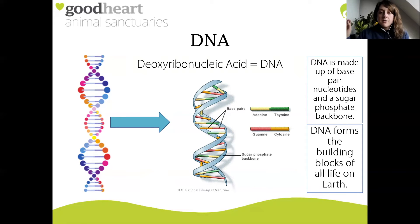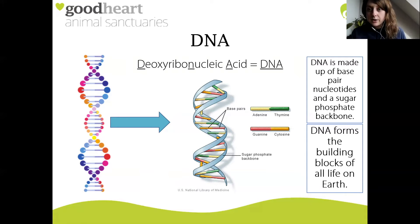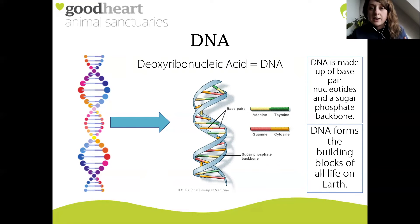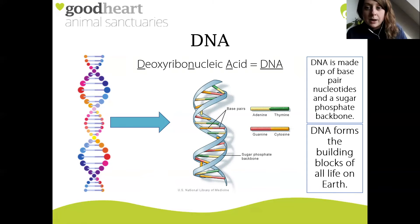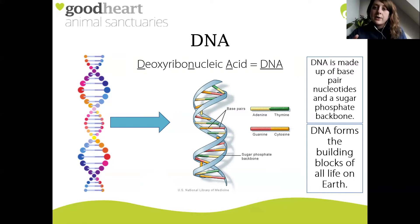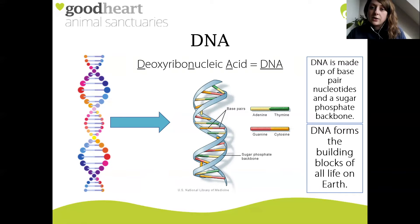Every bit of plant matter, every bit of animal matter that you're familiar with - even yourself - is made up of DNA. And all of our DNA is actually really similar. What scientists have started to do now is map out people's DNA and see if they can select certain genes to use for different purposes.